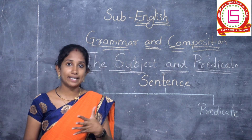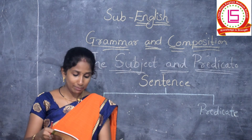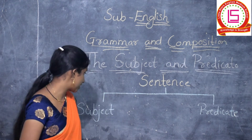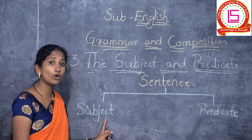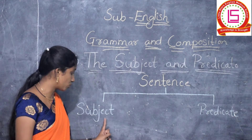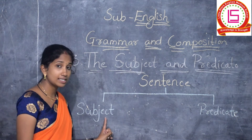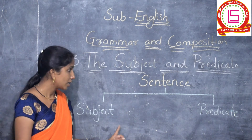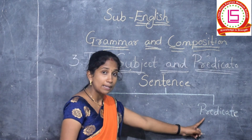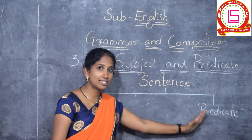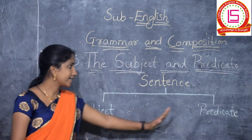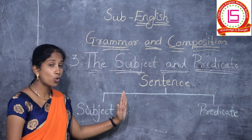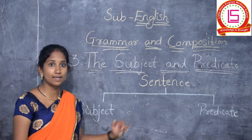And what do you mean by predicate? Predicate tells something about the subject. Subject is whom or what the sentence is about. Predicate is something which tells about the subject. Predicate tells about the subject, and subject is whom or what the sentence is about.